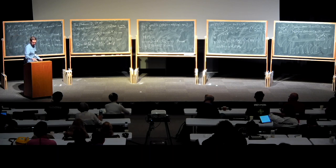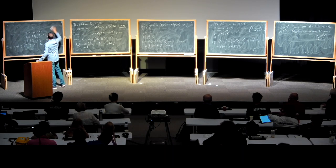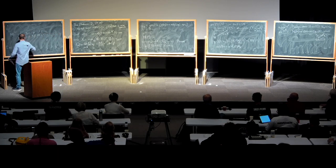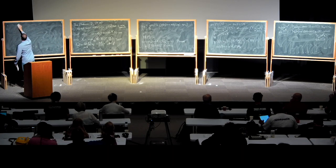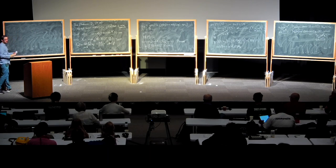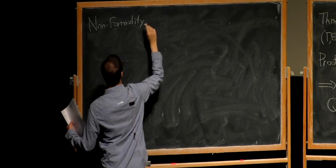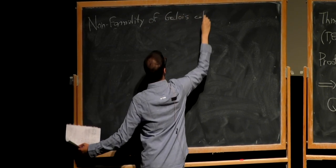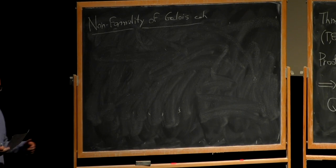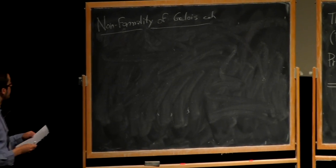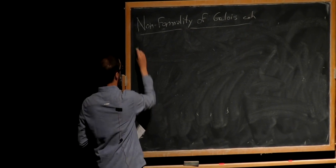That's all I wanted to say about formal Hilbert 90. In the remaining time I want to discuss a different topic: an application of Massey products — namely, non-formality of Galois cohomology. I need to talk about arbitrary DG rings now. For DG rings, Massey products still exist — that's the upshot — but first let me mention the formality notion.